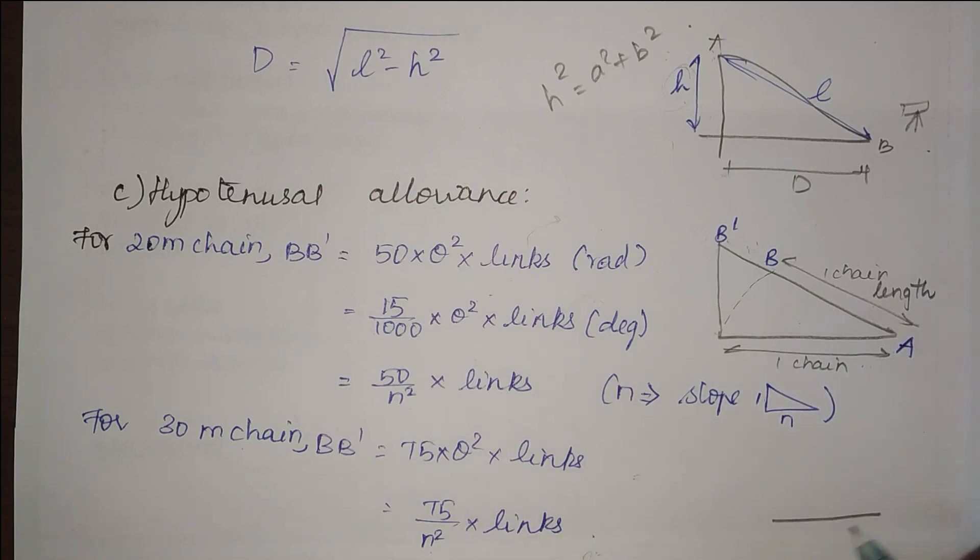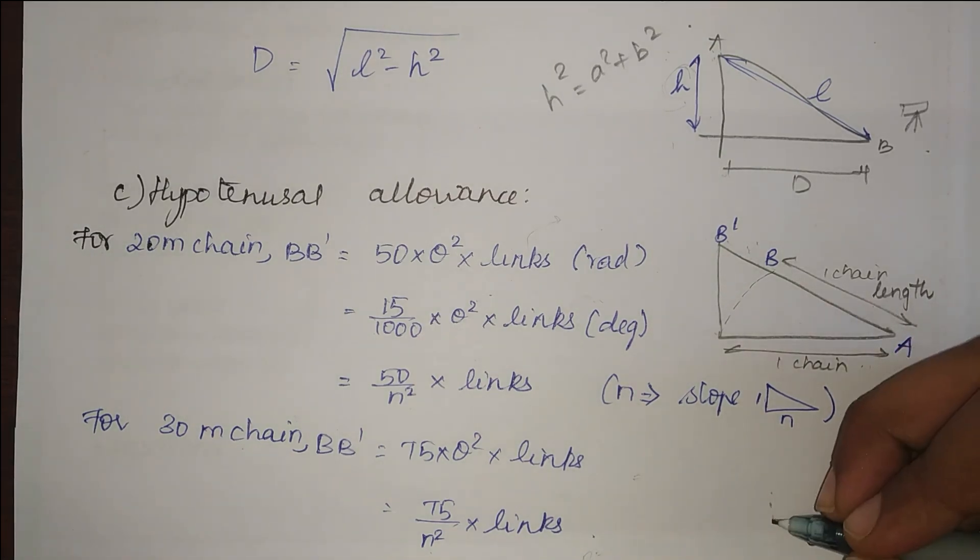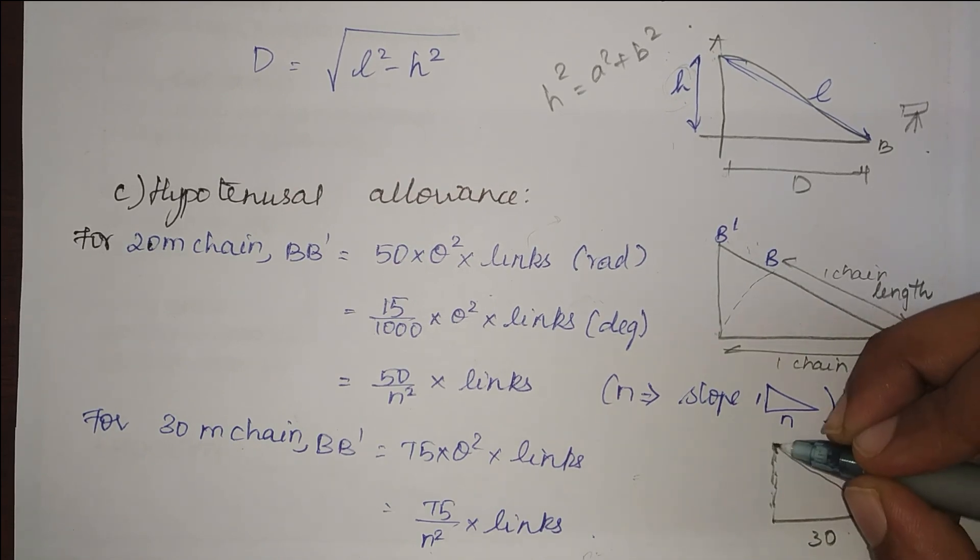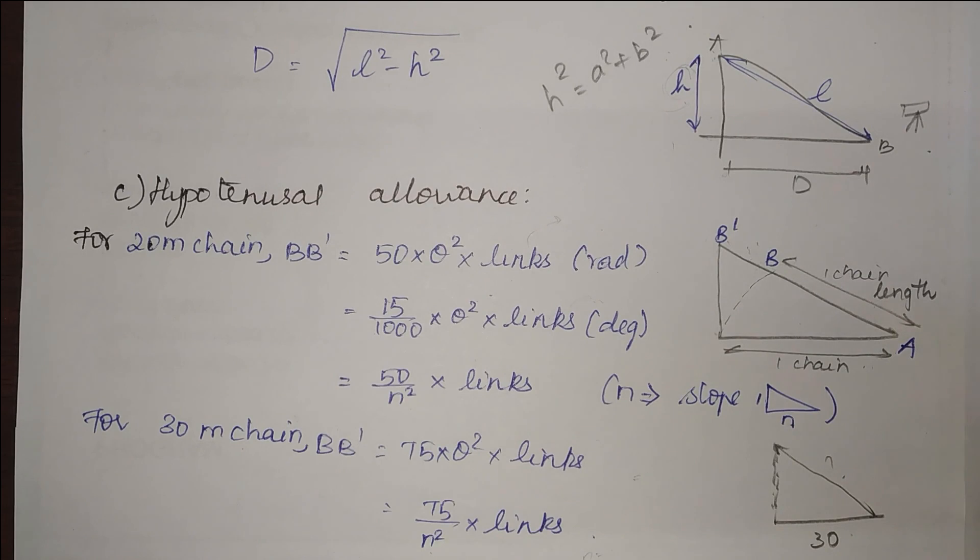If I know that my horizontal distance is going to be, say, one chain length of 30 meters, and I need to find the sloping distance, I can use the formula of hypotenusal allowance, which means it is going to be 30 plus this distance.